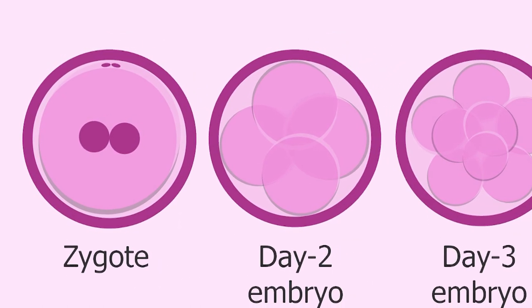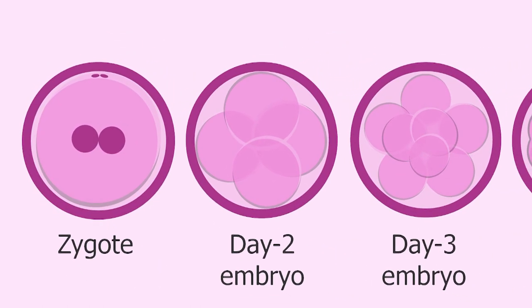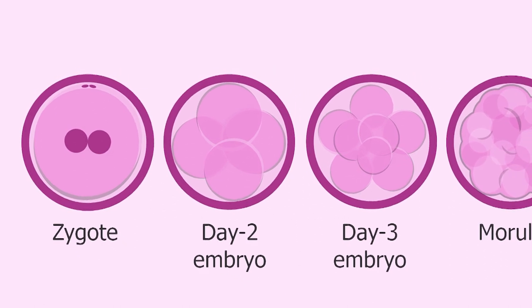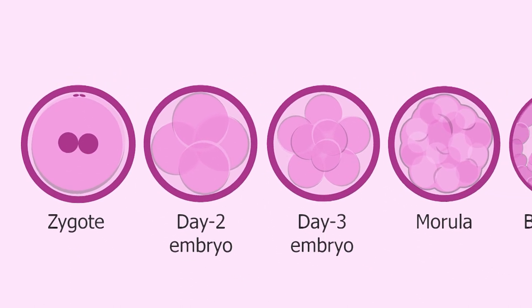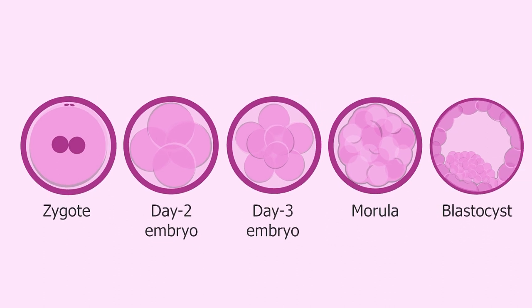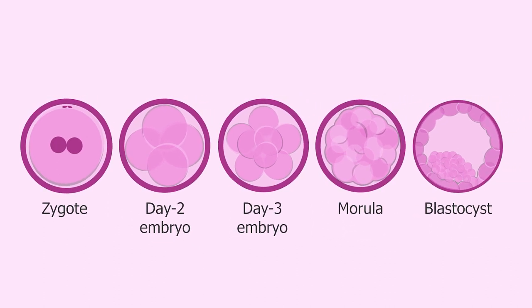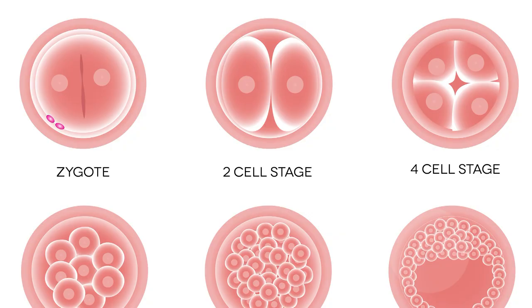Each division takes from 12 to 24 hours. Initially the dividing cells, called blastomeres — from the Greek word 'blastos' meaning sprout — are undifferentiated and aggregated into a sphere enclosed within a membrane of glycoproteins termed the zona pellucida of the ovum.